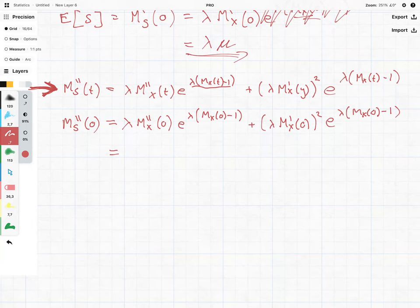We're setting this equal to 0, and we're going to now see the following: lambda M''x(0) times e to the Mx(0) minus 1, plus lambda M'x(0) squared times e to the lambda Mx(0) minus 1. So all we've done in this step is replace the t with the 0.